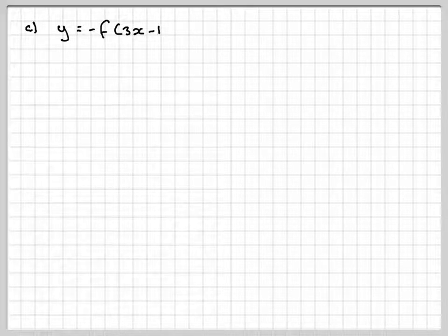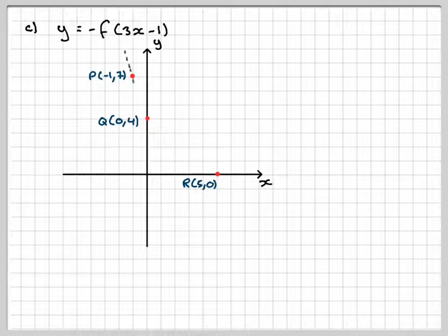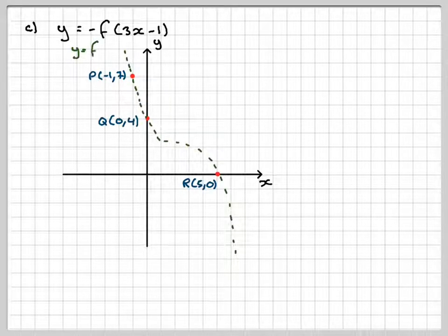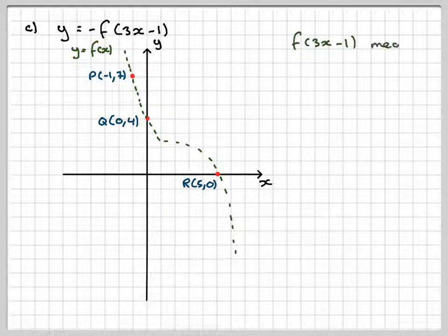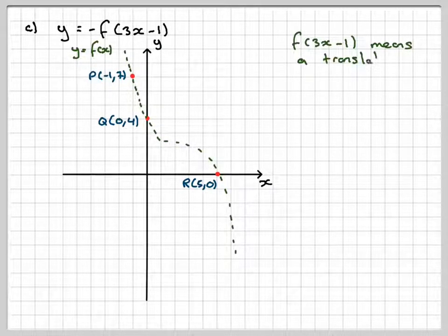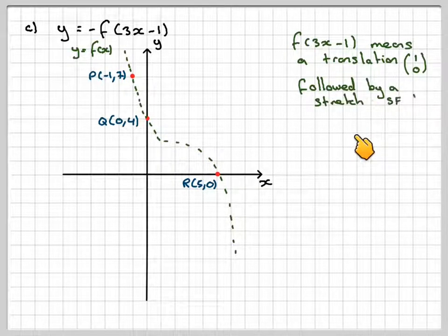The more difficult one is y equals minus f of 3x minus 1. If we draw the original graph, then we've got to work out here, what does f of 3x minus 1 mean? So f of 3x minus 1 means a translation of 1, 0, followed by a stretch, stretch factor 3.